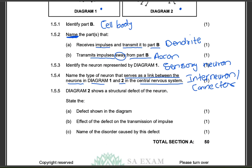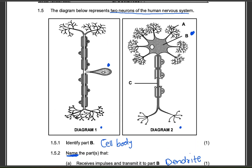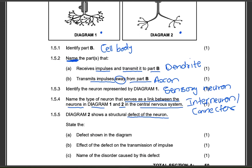Question 15.5: diagram two shows a structural defect of the neuron. State the defect shown in the diagram. Is there anything wrong with the axons, cell body, or dendrites? What I'm noticing is something happening in our myelin sheath. The myelin sheath is getting damaged — that's the defect. Damage of the myelin sheath, or you can say deterioration of the myelin sheath.